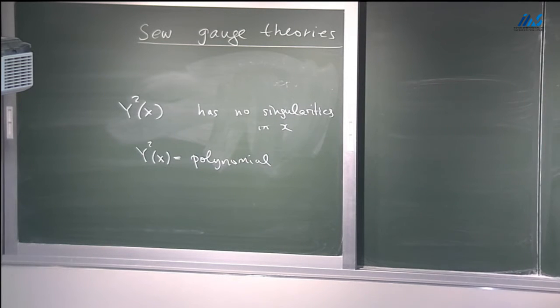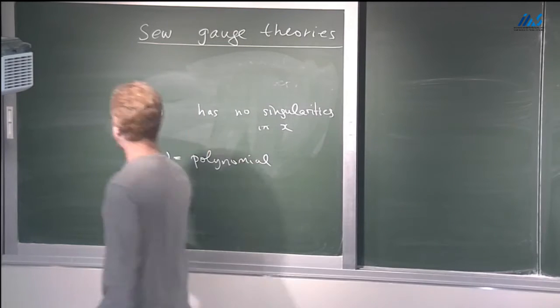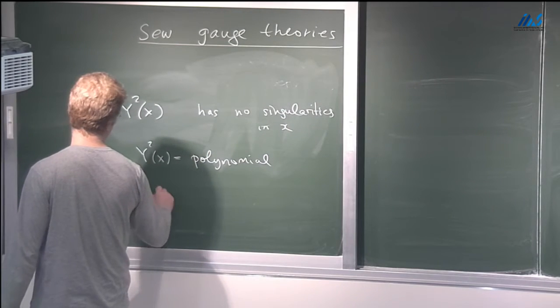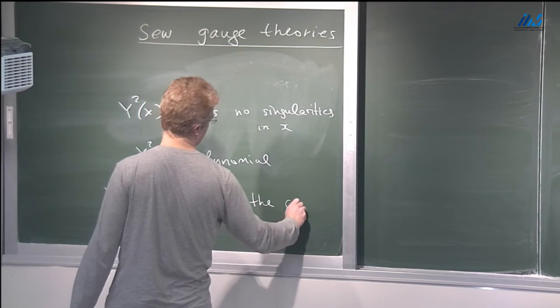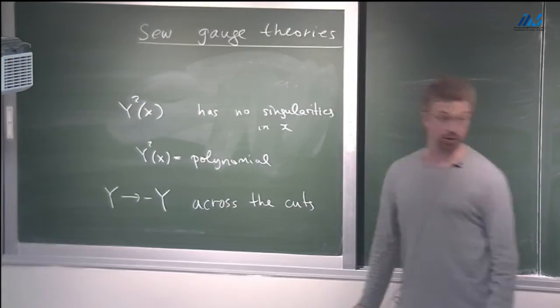So R gets a cut, may have several cuts, but let's assume it has a single cut. It has cuts. And the feature of this function is that it jumps across the cut in a rather simple fashion, such that if you introduce another function, something called y of x, this function simply changes sign when you cross the cut. So the natural observable, in this case, is the square of this shifted resolvent because it has no singularities in x. And so if v is a polynomial function, then by asymptotics at infinity, you can conclude that it is a polynomial.